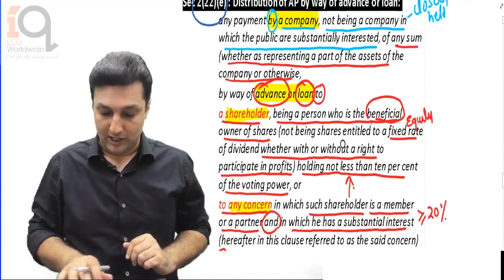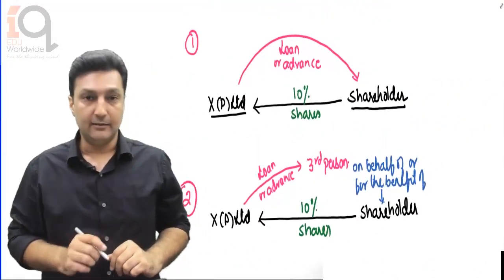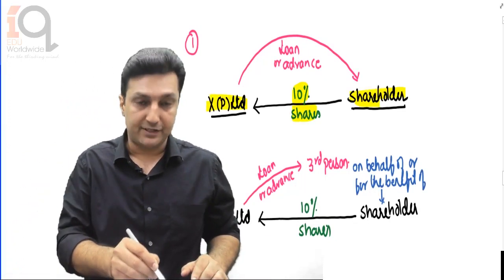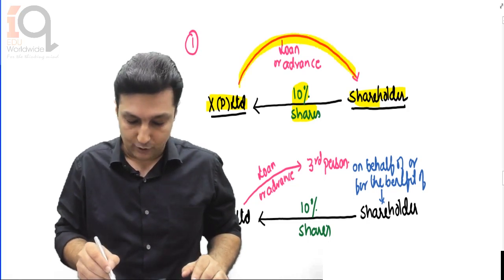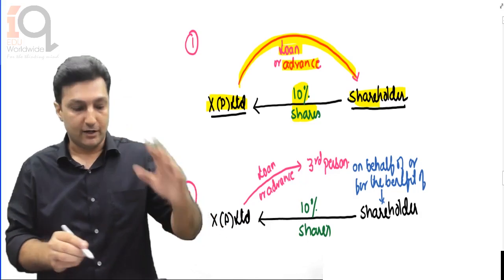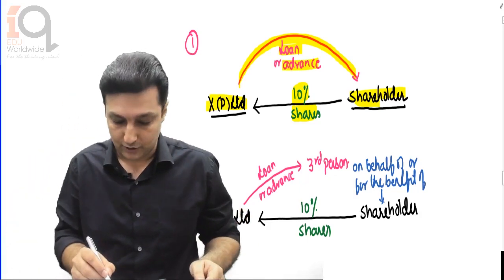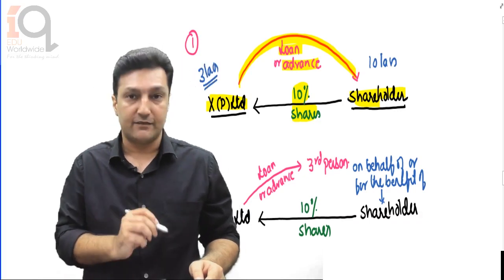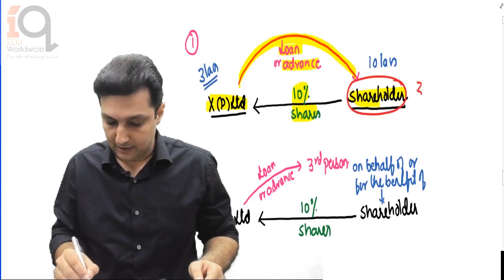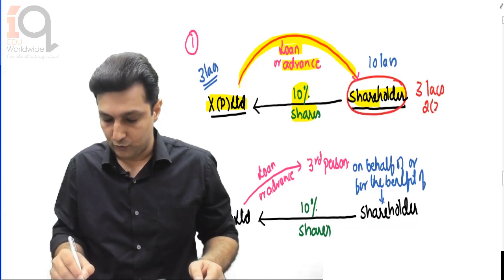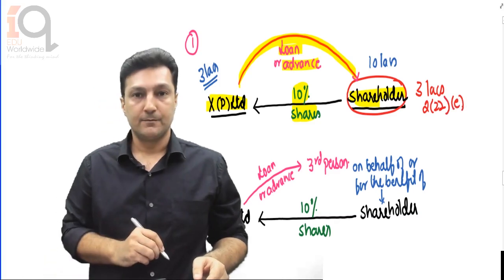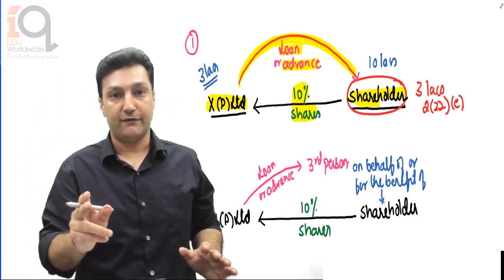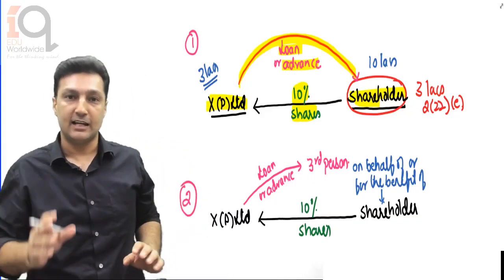Let's now understand what was said - there are 3 things mentioned. First: a closely held company, whose shareholder has 10% beneficial ownership - if this company gives a loan or advance to that shareholder, it becomes deemed dividend to the extent of accumulated profits. For example, if the loan is 10 lakhs and the company has only 3 lakhs of accumulated profits, then 3 lakhs will be deemed dividend under section 2(22)E. No CDT will apply, the company pays no tax on it, but they'll have to deduct TDS under section 194 at the rate of 10%, and this is taxable in the hands of the shareholder.